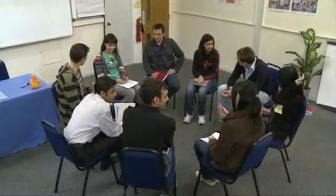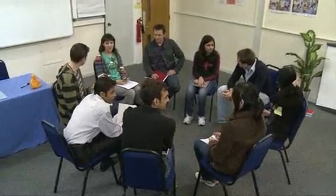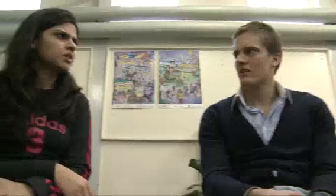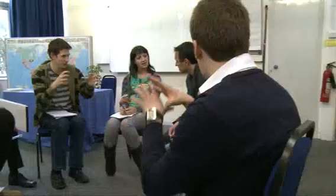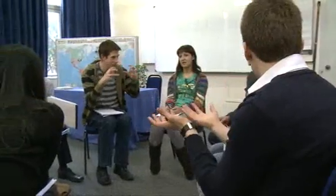A circle is good for discussions or pair work while the teacher monitors from the back. Both in a horseshoe and in a circle, all the students feel equal and can contribute.